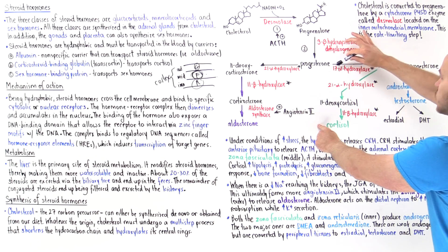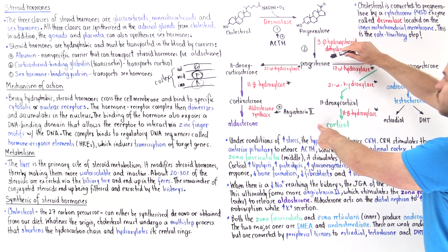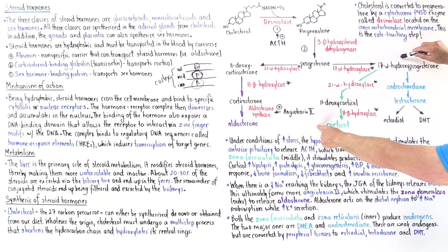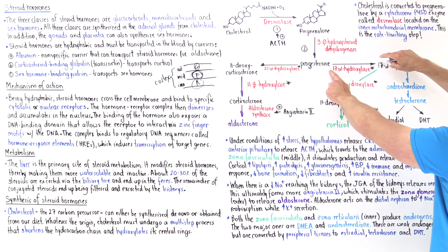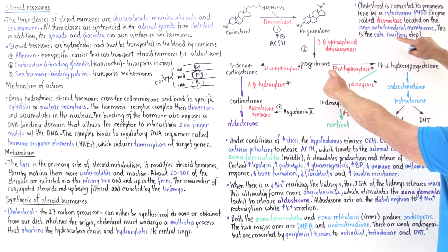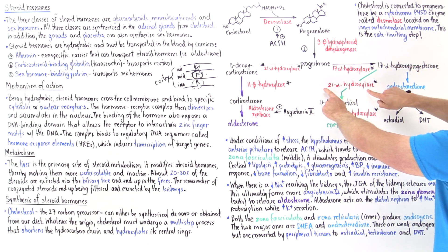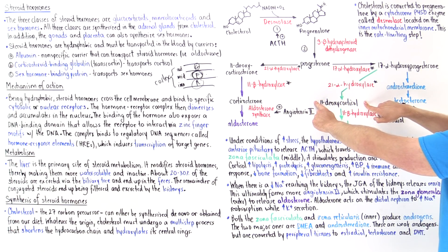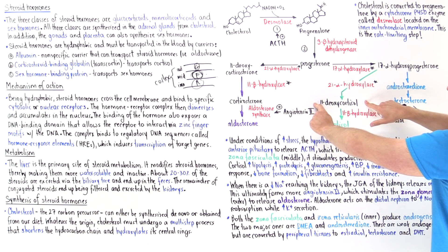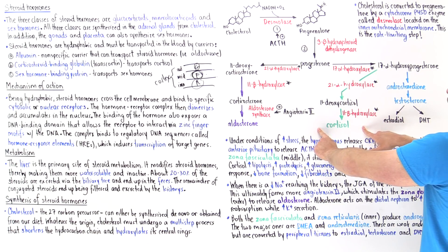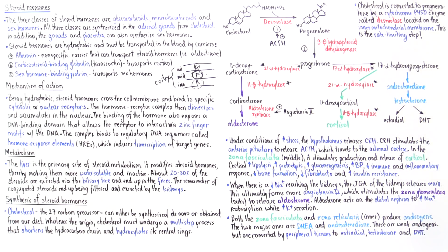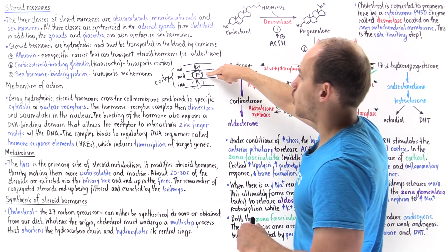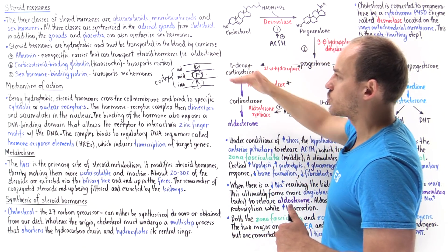Regarding cortisol synthesis in the zona fasciculata: progesterone is converted into 17-alpha-hydroxyprogesterone by 17-alpha-hydroxylase, then into 11-deoxycortisol by 21-alpha-hydroxylase, and finally 11-deoxycortisol is converted to cortisol by 11-beta-hydroxylase.